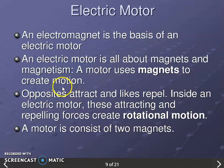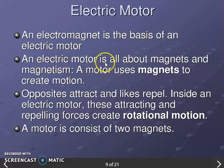The electric motor is based on electromagnetism. A motor uses magnetism to create motion. Inside an electric motor, attraction and repulsion between magnets cause rotation — opposite poles attract and like poles repel. This gives us the rotational motion. The motor consists of two magnets.